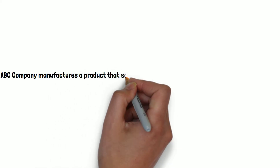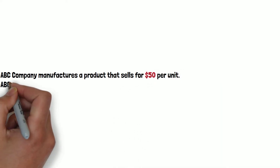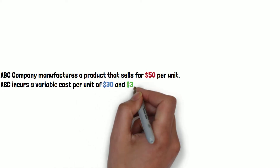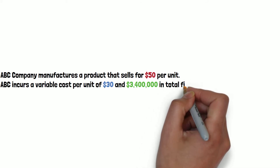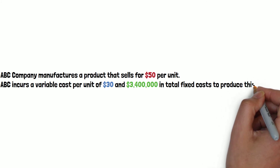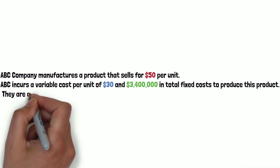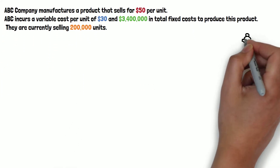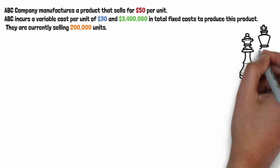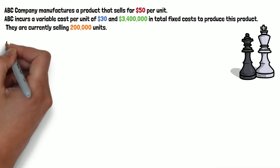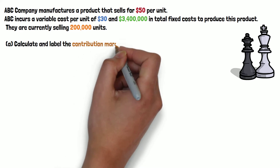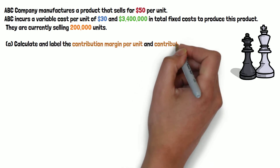We are going to use one example to go through all the key concepts for cost-volume-profit analysis. ABC company manufactures a product — a chess set — that sells for $50 per unit. ABC incurs a variable cost per unit of $30 and $3.4 million in total fixed costs. They are currently selling 200,000 units. The first question: calculate and label the contribution margin per unit and contribution margin ratio.